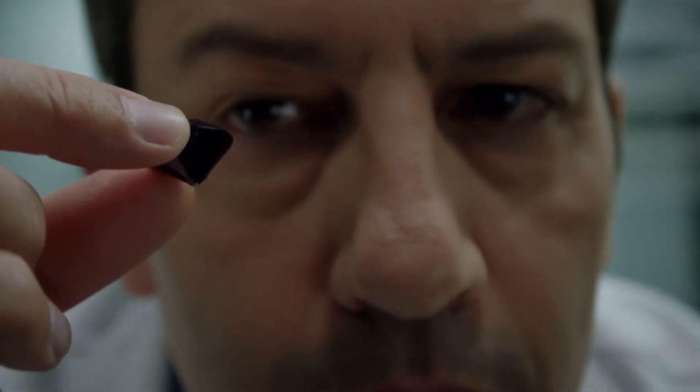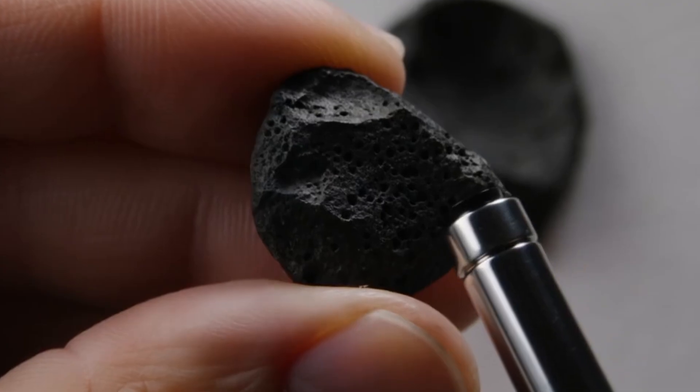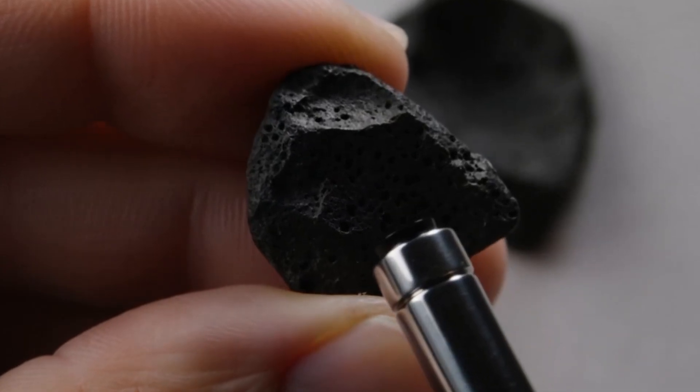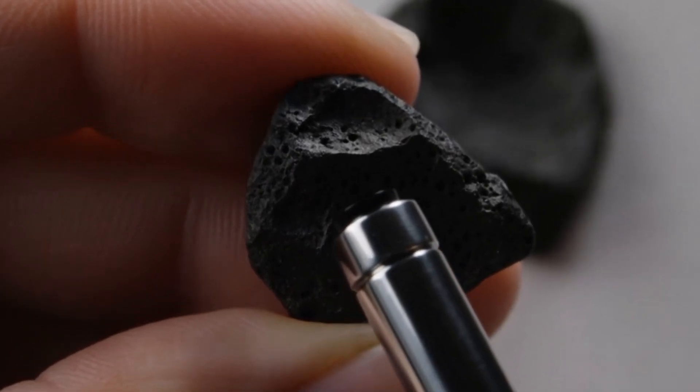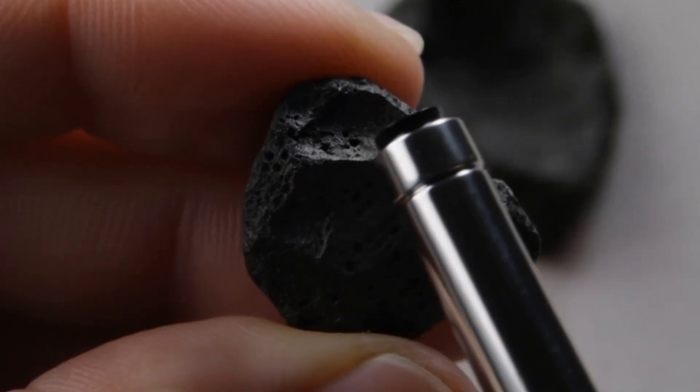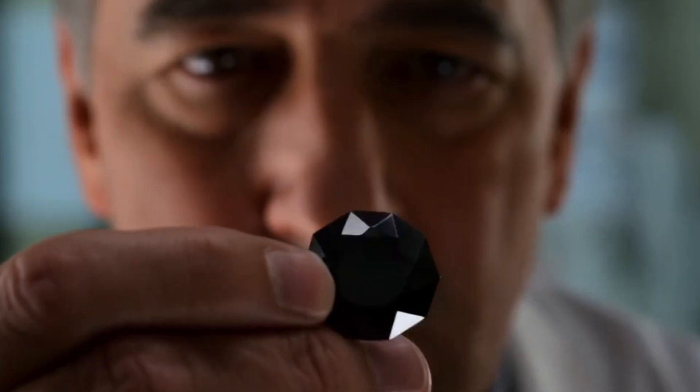Where are they found? Most natural black diamonds come from only two main locations on Earth, Brazil and the Central African Republic. This rarity makes them even more special. Unlike other diamonds that are found worldwide, carbonado is highly restricted in its geographical source.